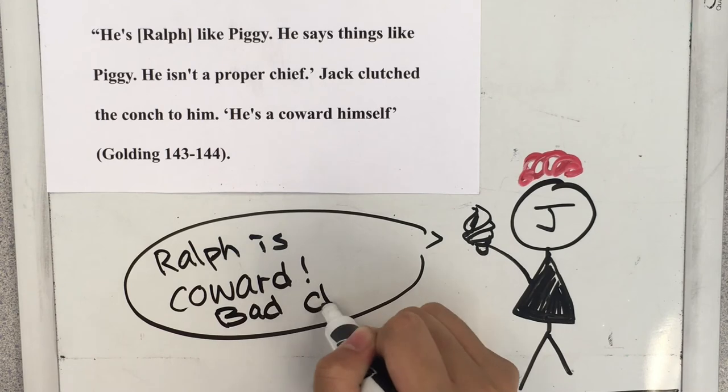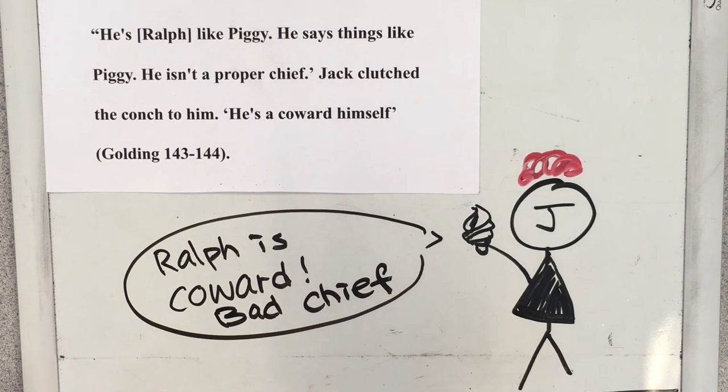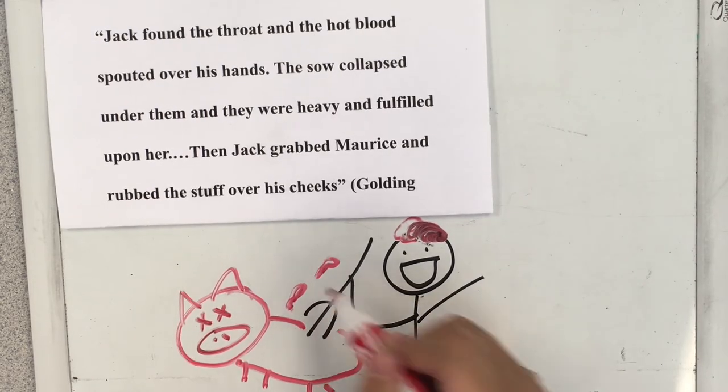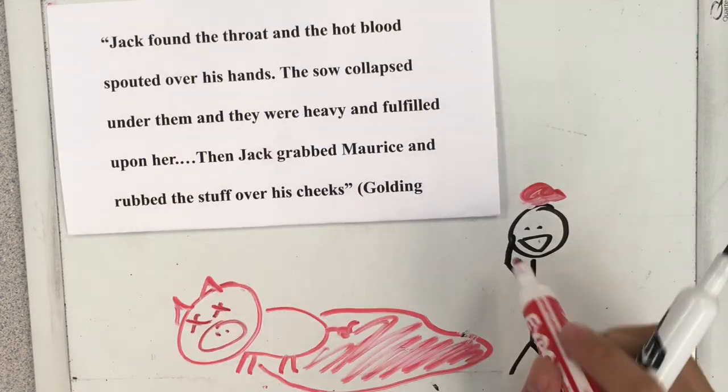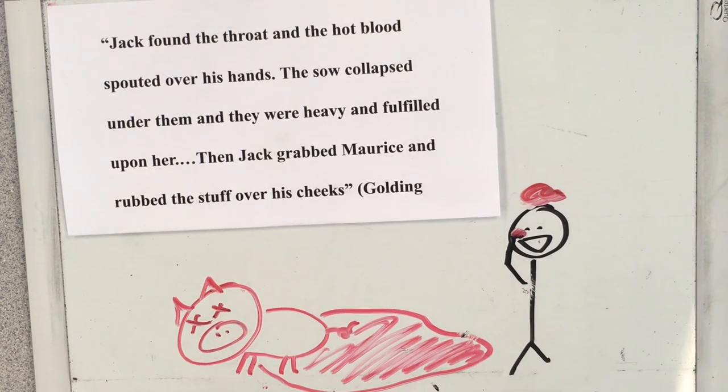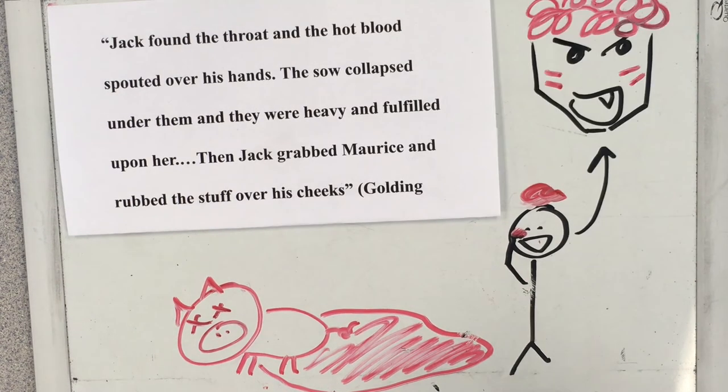However, his defiance of Ralph foreshadows the clash he will have with rules and limits, activating the savage nature hidden within him. Jack found the throat and the hot blood spouted over his hands. The sow collapsed under them, and they were heavy and fulfilled upon. Then Jack grabbed Maurice and rubbed the stuff over his cheeks.